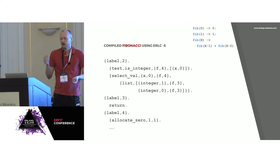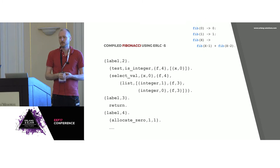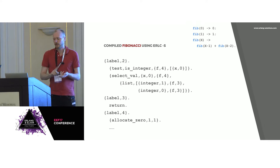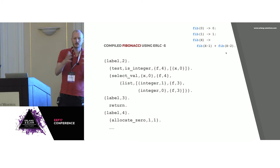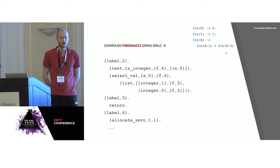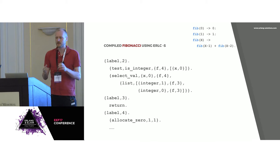The pretty-printed version looks something like this. In this function, we first test if the input is an integer, then we do a select_val, which is a dispatch table. If we have a zero or a one, we jump to label three. If it's not a zero or a one, we jump to label four to do the rest of the code. Select_val is used when you have multiple targets — if you have two targets, you do a compare and other kinds of operations instead.